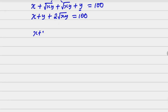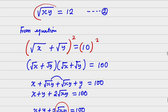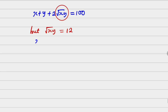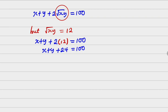Now we have x + y + 2√(xy) = 100. We check our initial equations and can see that √(xy) = 12. So substituting, we get x + y + 2 × 12 = 100, which gives x + y + 24 = 100, therefore x + y = 100 − 24, so x + y equals 76.